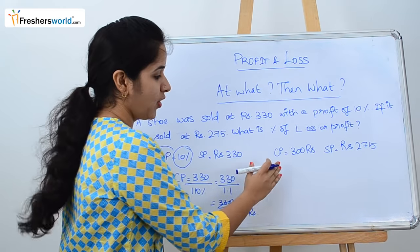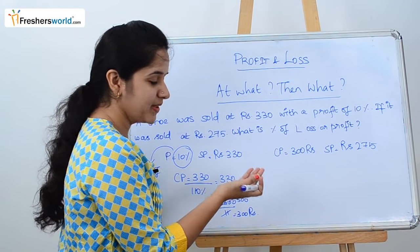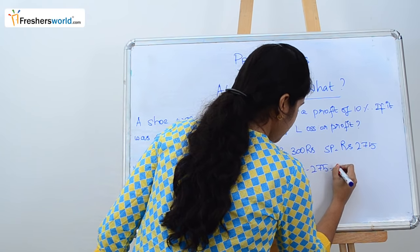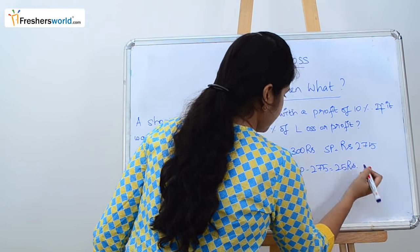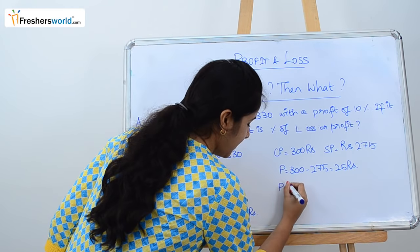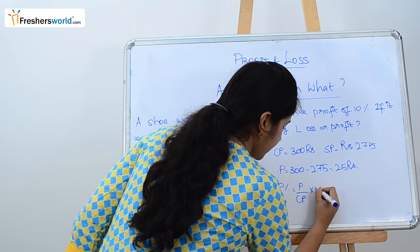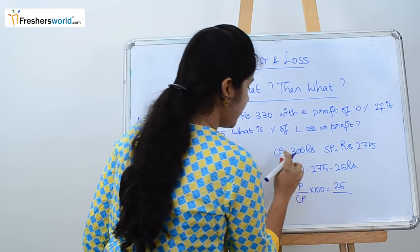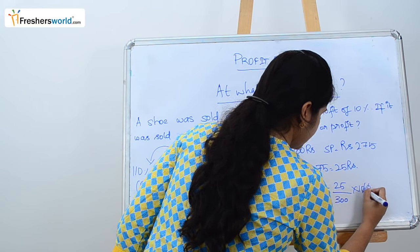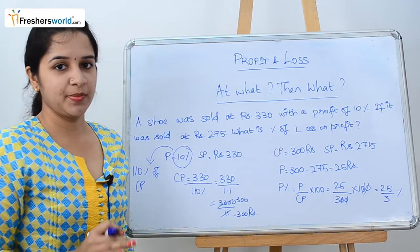Now, the cost price is 300 rupees and the new selling price is 275 rupees. Since cost price is higher than selling price, it's a loss. Loss equals 300 minus 275, which is 25 rupees. They are asking for loss percentage, which is loss by CP into 100 — that is 25 by 300 into 100, giving 25/3 percent as the loss percentage.